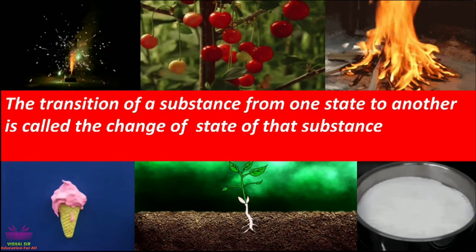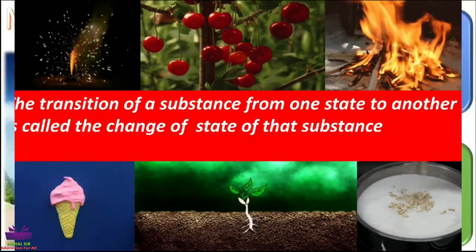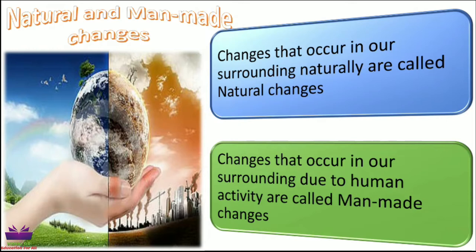Now, let us study the different types of changes. The first type is natural change and man-made change. Natural changes are changes that occur in our surroundings naturally — they occur on their own. Whereas, the changes that occur in the surroundings due to human activities are called man-made changes.